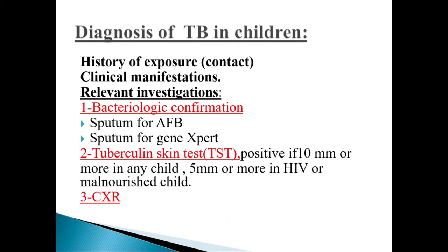Diagnosis of tuberculosis in children: the most important thing is the history of exposure or contact with an adult with tuberculosis. Number two is clinical manifestations and relevant investigations. We have three corners for diagnosis of tuberculosis in children — we cannot rely on one. Adults are usually the source of infection for children.